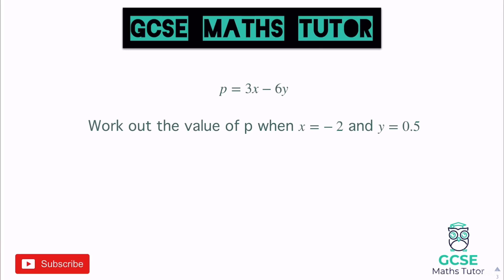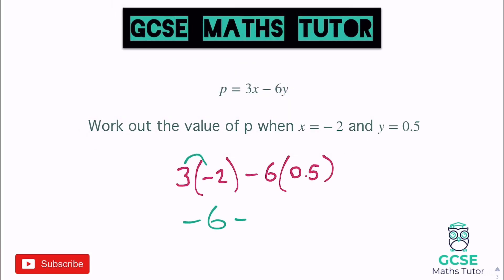So we sub in: 3 lots of negative 2, taking away 6 lots of 0.5. Working step by step: 3 lots of negative 2 is negative 6. For 6 lots of 0.5 — six halves is 3. So we have negative 6 take away 3, which is negative 9. And that's how you substitute values into an expression.